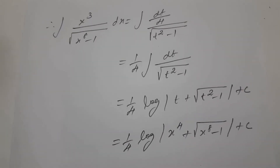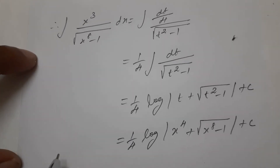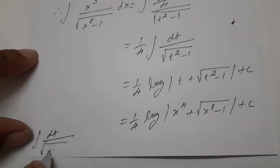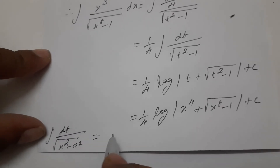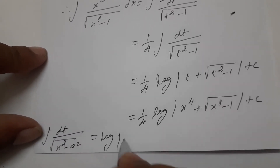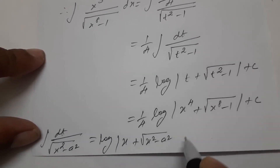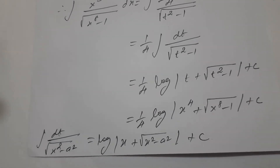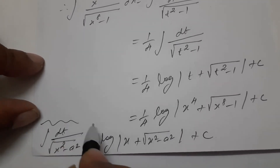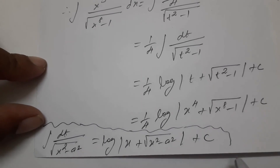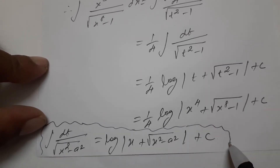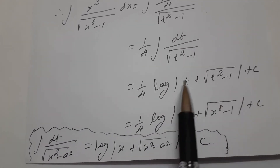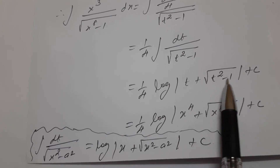If we know the formula, we can apply it. The formula is: integration dt divided by square root of x square minus a square is equal to log of x plus square root of x square minus a square, plus c. So applying the formula, we get one by 4 log of t plus square root of t square minus 1, plus c.